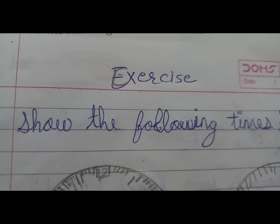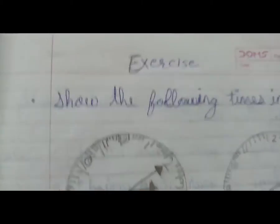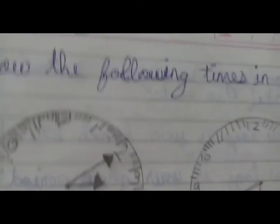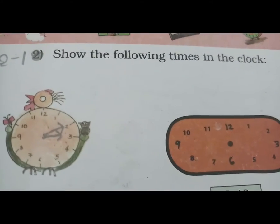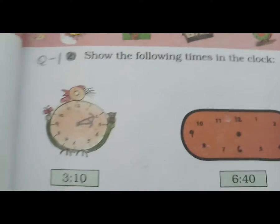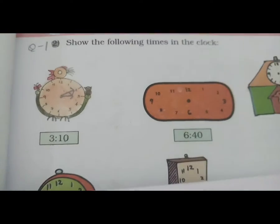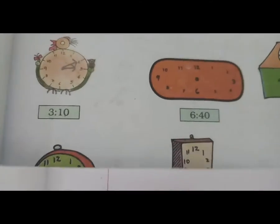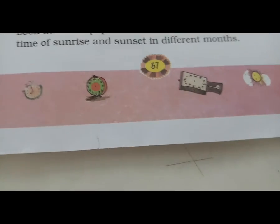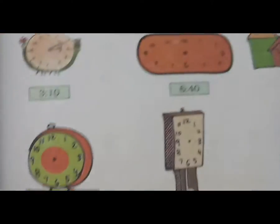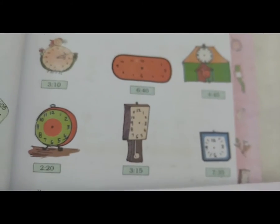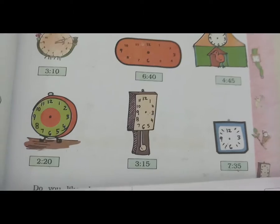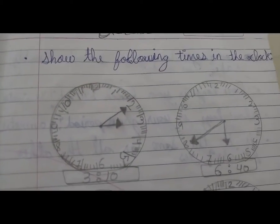Show the following time in the clock. On your textbook page number 37, you have to draw the clock. You already draw this type of clock, or you draw this type also.